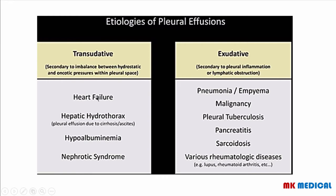In another case, blood vessel cells have interendothelial gaps that are normally small enough that proteins and cells do not leave. However, if there is an inflammatory process, cytokines can be released to increase these interendothelial gaps, recruiting white blood cells through them, such that the fluid accumulating around the vessel is very rich in proteins and cells — you refer to this as an exudate. Exudates are associated with inflammatory conditions and malignancies. Transudate causes include heart failure, hepatic hydrothorax, hypoalbuminemia, and nephrotic syndrome. Exudate causes include pneumonia or empyema, malignancies, pleural TB, pancreatitis, sarcoidosis, and rheumatological diseases such as lupus and rheumatoid arthritis.